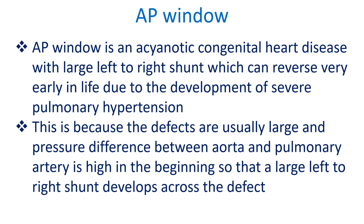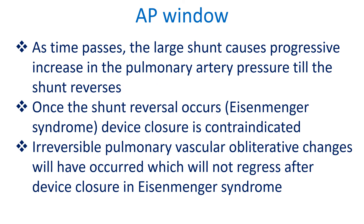AP window is an acyanotic congenital heart disease with a large left-to-right shunt, which can reverse very early in life due to the development of severe pulmonary hypertension. This is because the defects are usually large and the pressure difference between the aorta and pulmonary artery is high initially, producing a large left-to-right shunt. As time passes, this large shunt causes a progressive increase in pulmonary artery pressure until the shunt reverses.